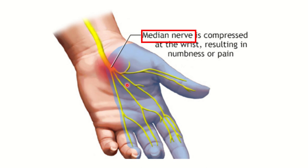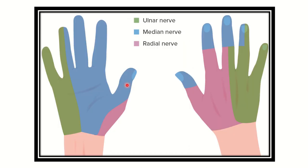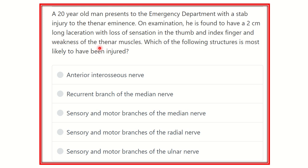Hi everyone, welcome to another question and answer session. This is question — a 20-year-old man presents to the emergency department with a stab injury to the thenar eminence. On examination, he is found to have a two centimeter long laceration with loss of sensation in the thumb and index finger and weakness of the thenar muscles. Which of the following structures is most likely to have been injured?